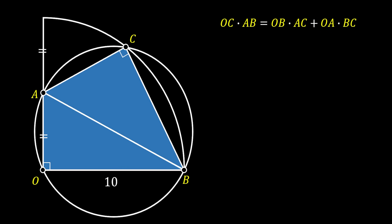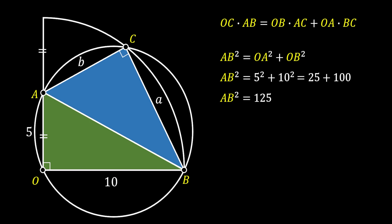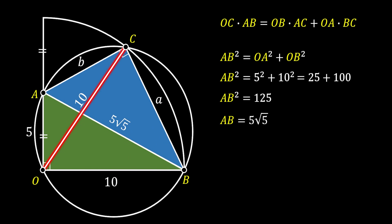First we find all needed values. OA equals half the radius, so it is 5. I'll label side BC as 'a' and AC as 'b'. Looking at right triangle OBA and applying the Pythagorean theorem, we get AB² = 125, which simplifies to AB = 5√5. We also note that radius OB can be rotated up to point C, so OC also has the value of 10.